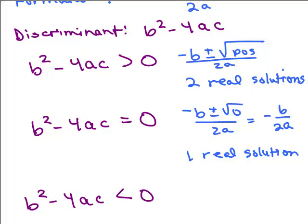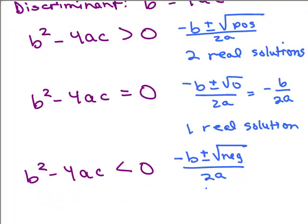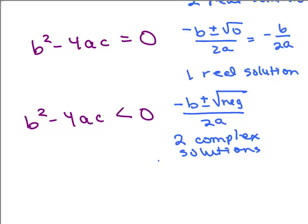What happens if what's underneath the square root is a negative number? You're going to get the square root of a negative number, which gives you i. So you'll have plus something with an i in it and minus something with an i in it — two different solutions. In fact, they're going to be complex conjugates, so you get two complex solutions. They're called complex conjugates, and they're not real.